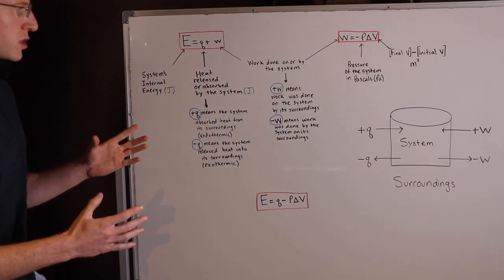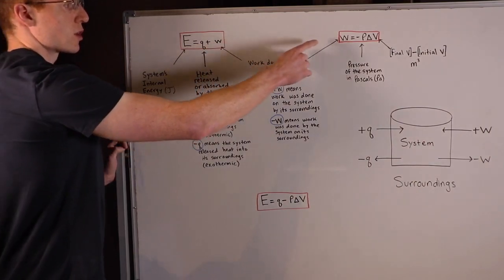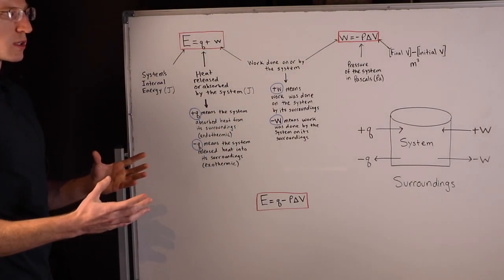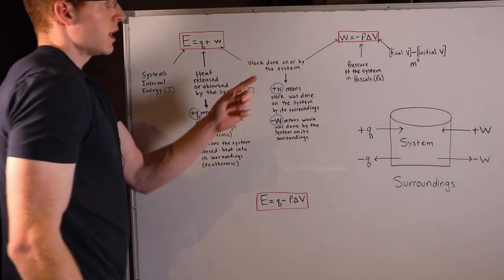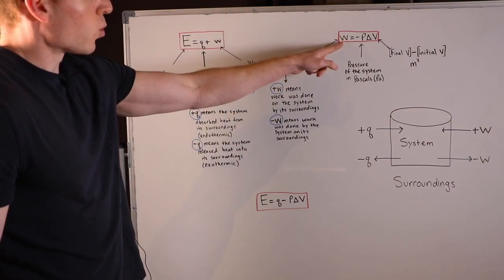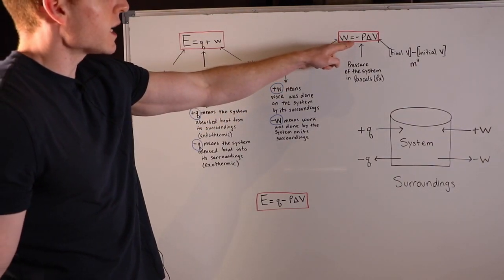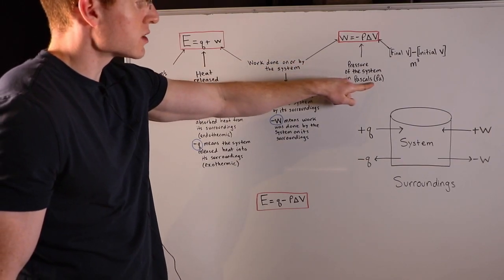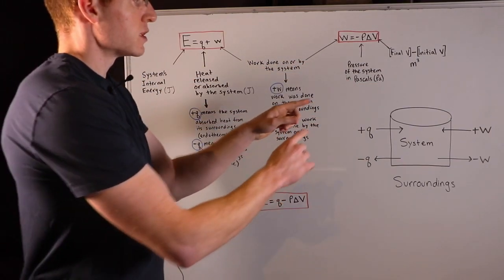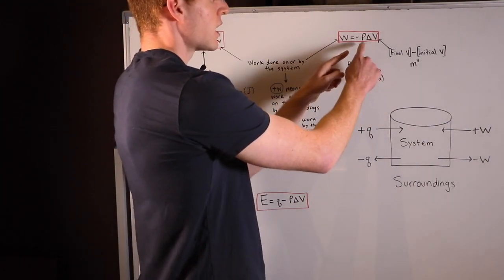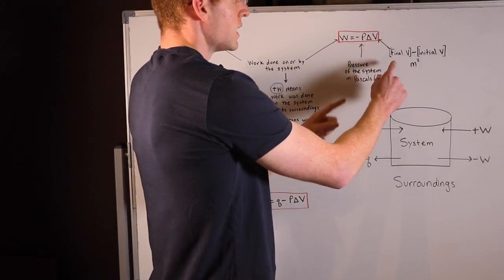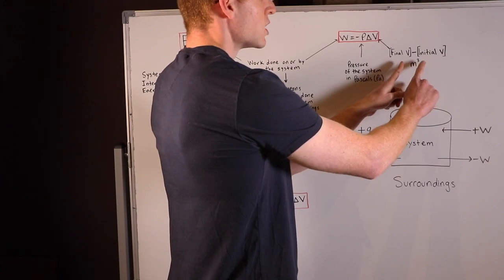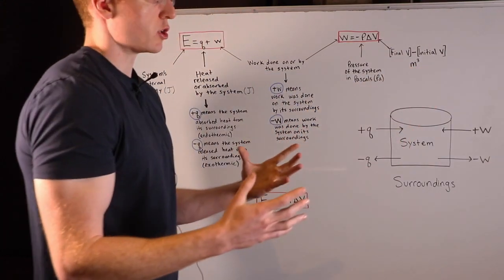So there's another special way that we can write this W here in another equation to be more descriptive in terms of pressure and volume. And I've written it right here. It says that work is equal to negative pressure, or pressure of the system in pascals. And it's important that you have to use these units, pascals, times the change in volume. And you have to use the volume in units of cubic meters or meters cubed.